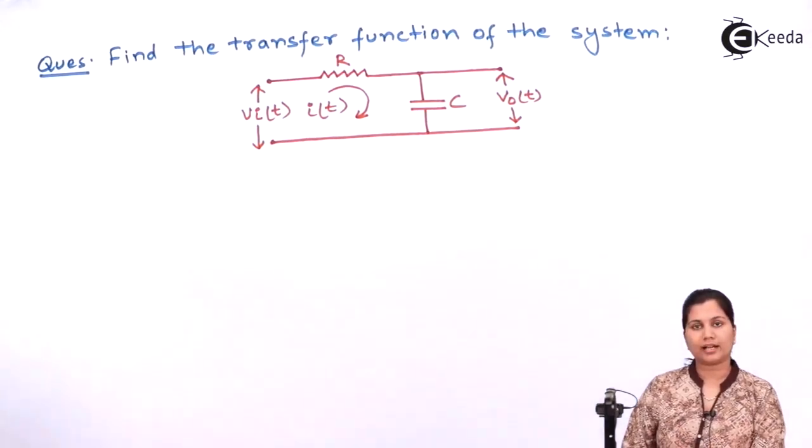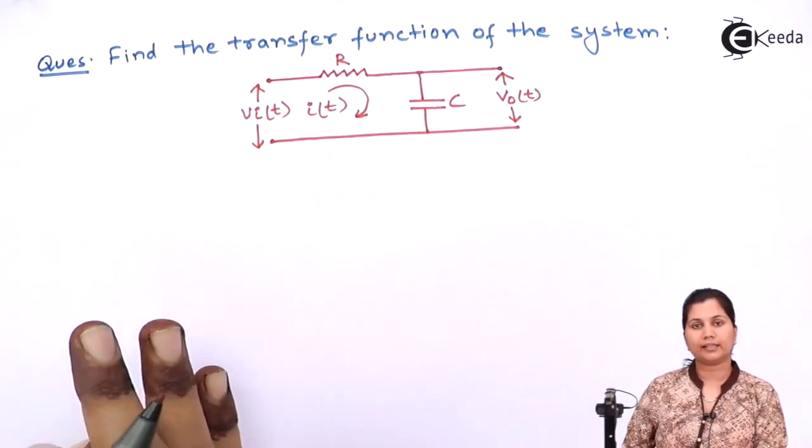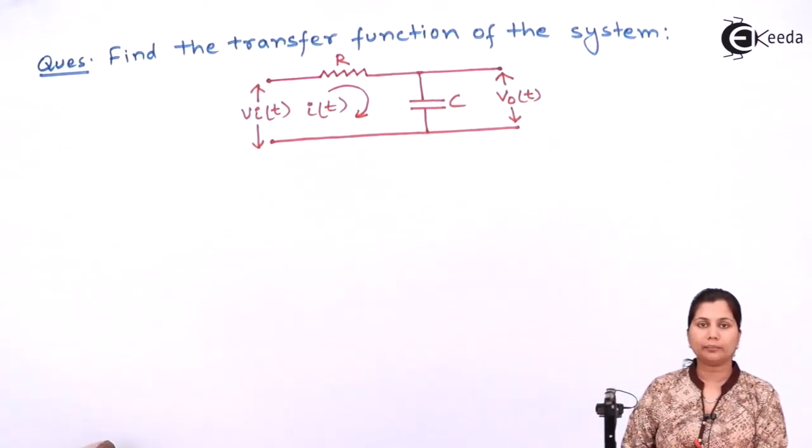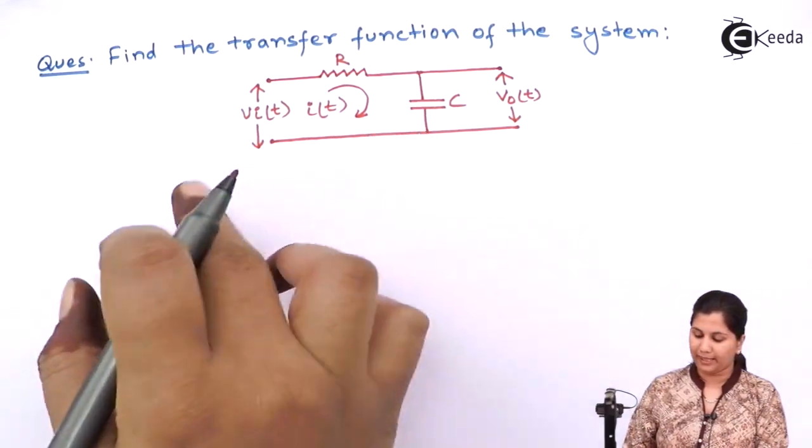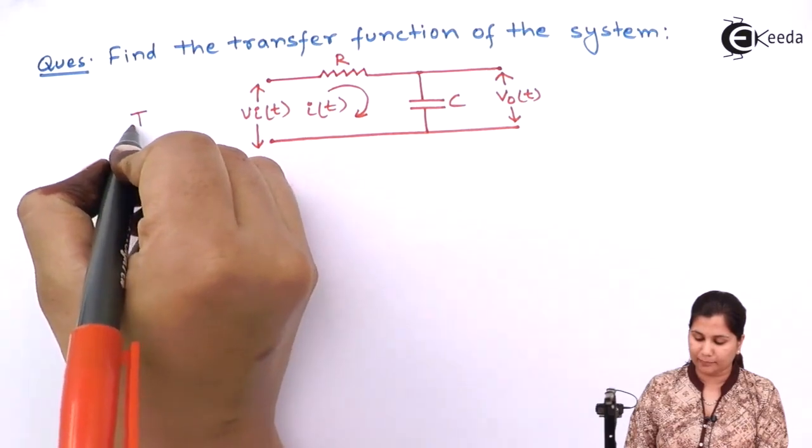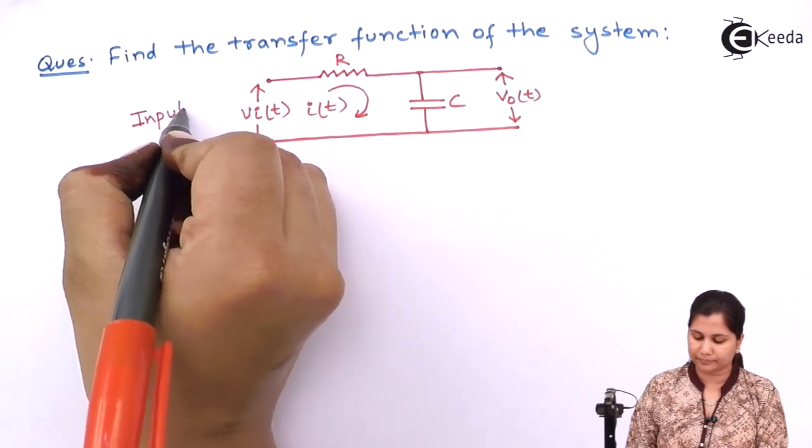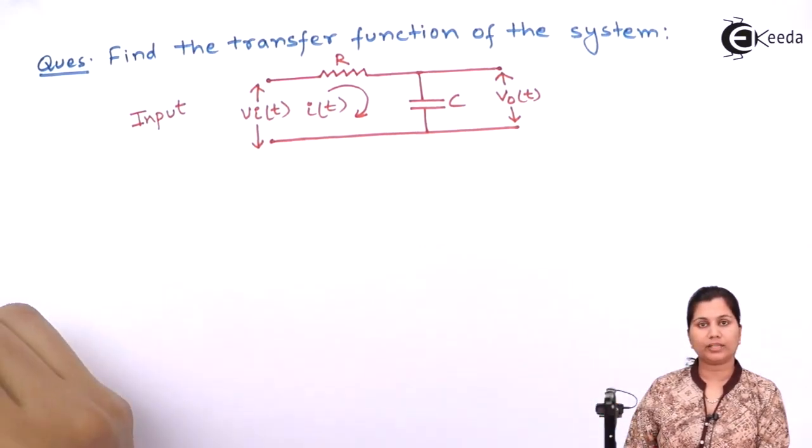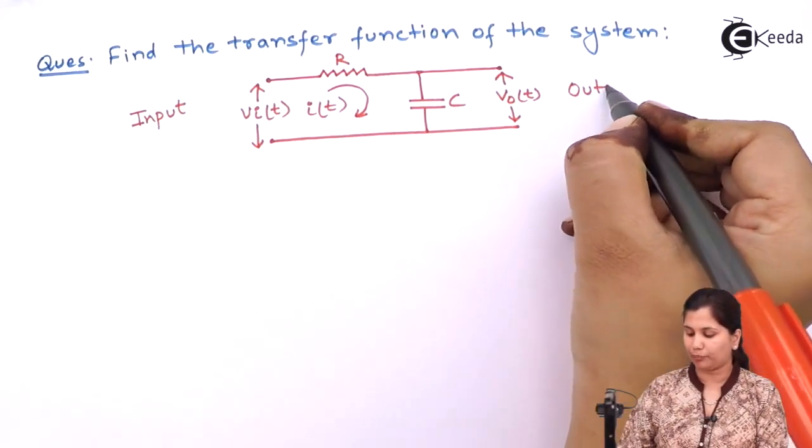For finding the transfer function, first determine what is your input and what is your output. In this, we have VIT as the input and VOT as the output.